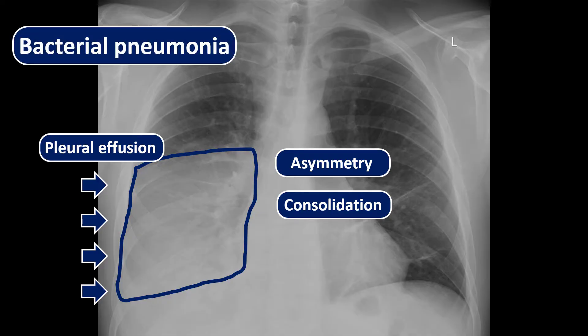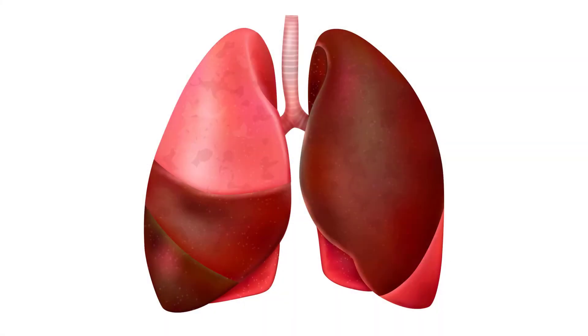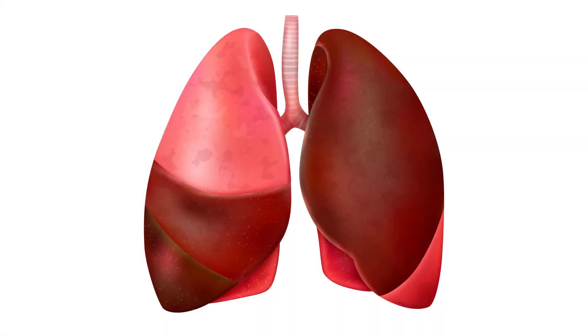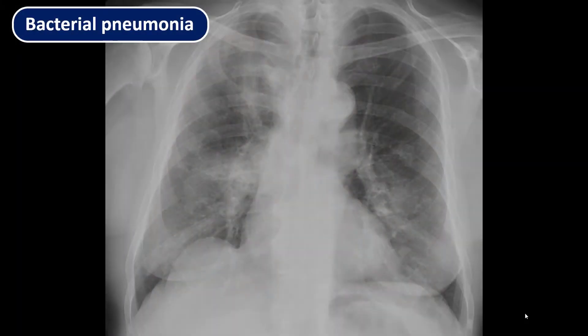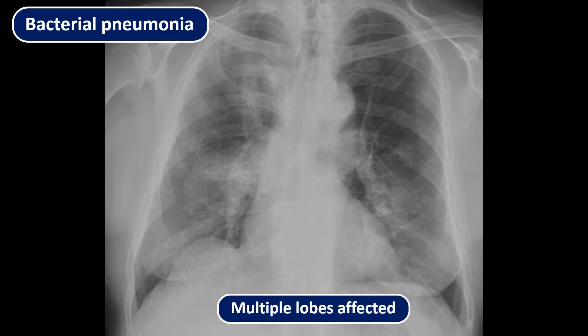More specifically, lobar pneumonia — where only some lobes are affected, while others are clear. This is an example of bacterial bronchopneumonia with multifocal patchy infiltrates, where the borders are not that clear, but you can still see asymmetry.